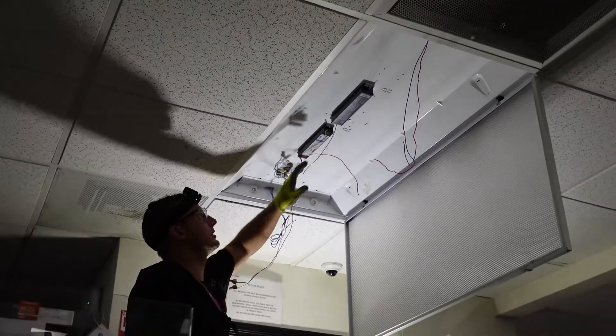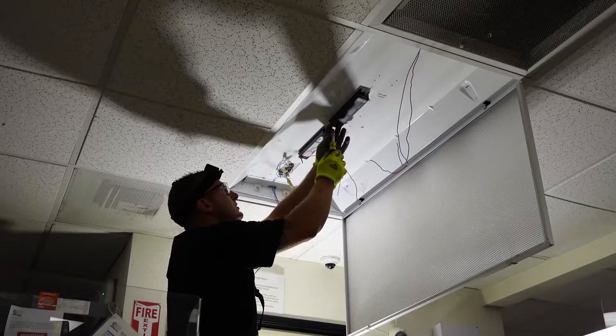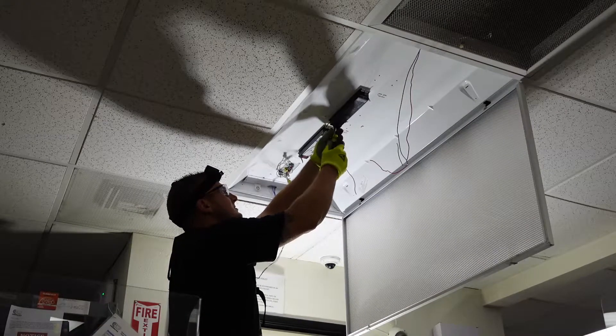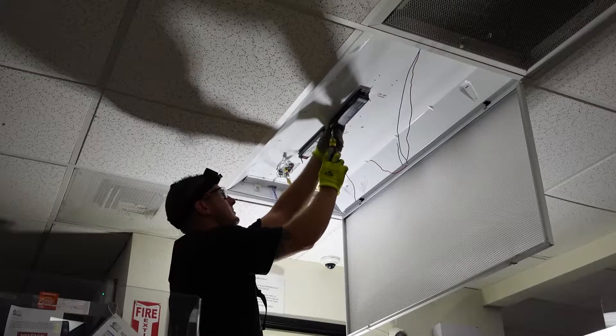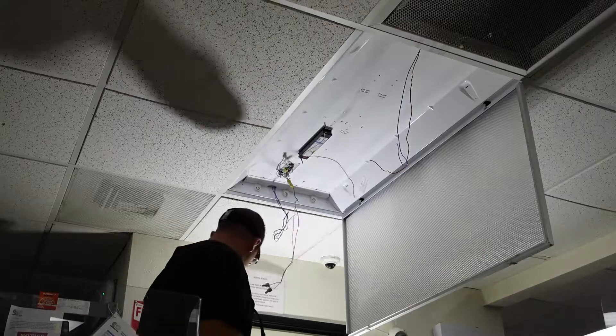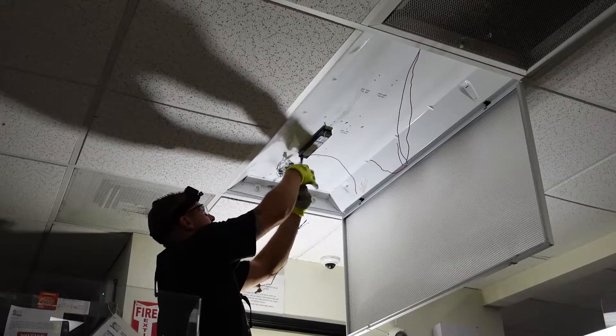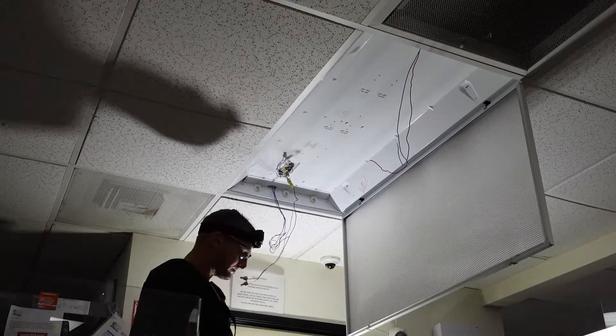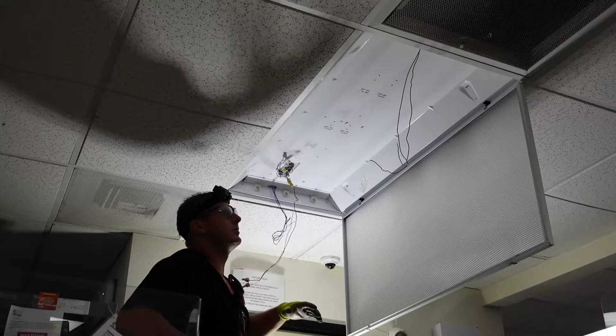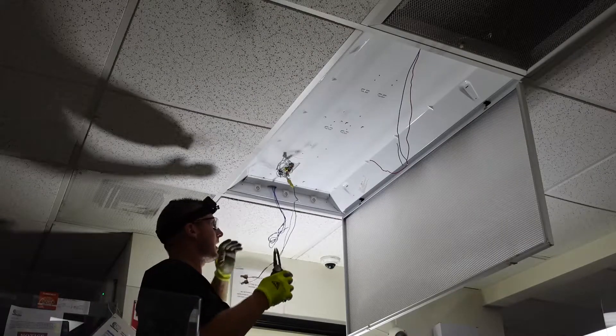The next thing what we're going to do is take out these ballasts. They just have two screws right here. Now we will strip all the wires.